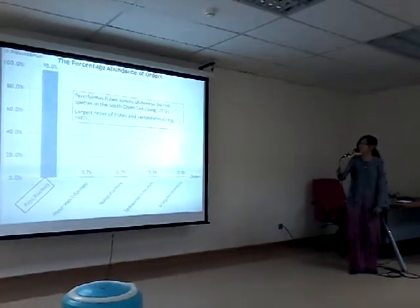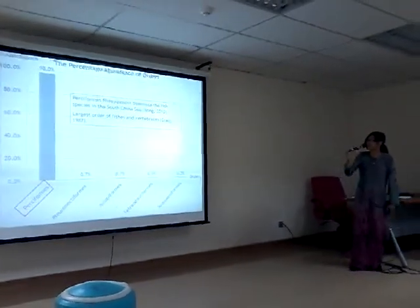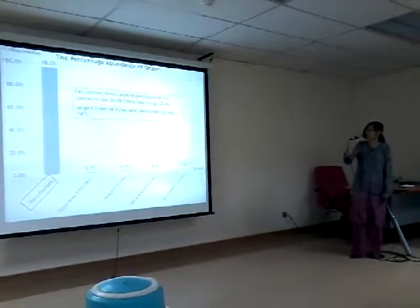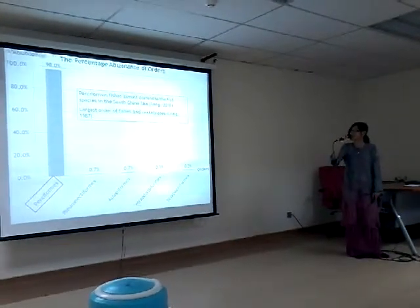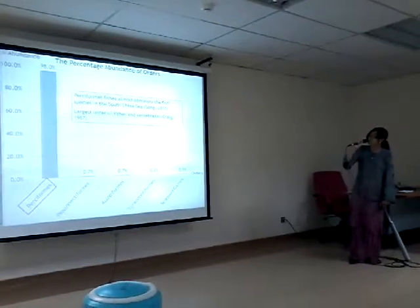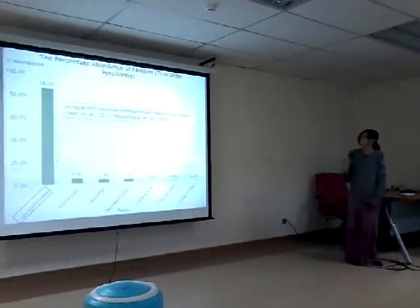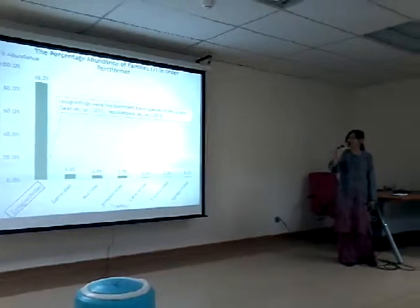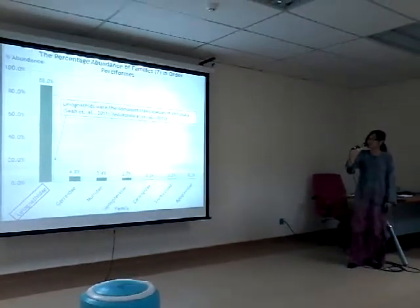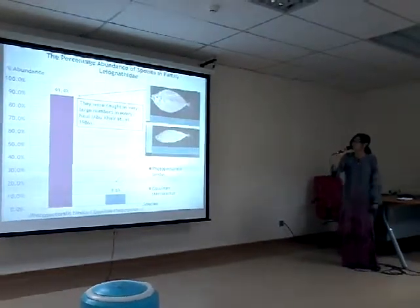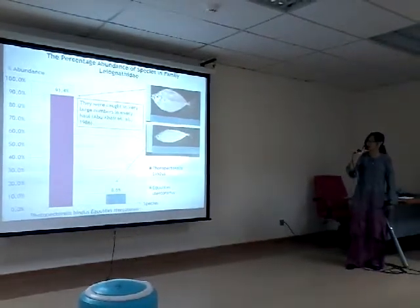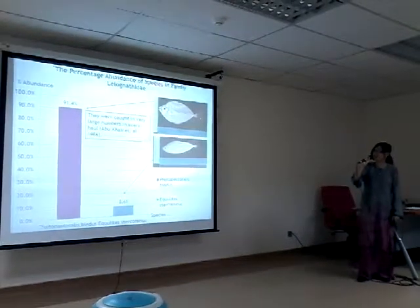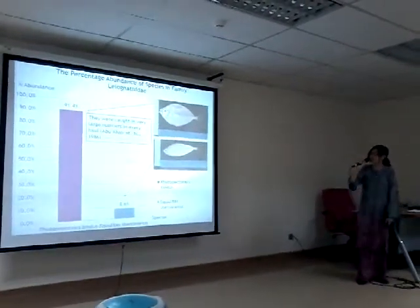The highest order is Perciformes. Based on two studies, Perciformes fishes almost dominate the fish species in the South China Sea, which is consistent with my study at 98%. Based on another reference, the largest order of fishes and vertebrates is the order Perciformes. Focusing on this order, the family Leiognathidae is the highest at 88%, and several studies also state that Leiognathidae were the dominant trawl species. Within this family, we have two species: Photopectoralis bindus and Equulites declivifrons. Photopectoralis bindus is the highest.